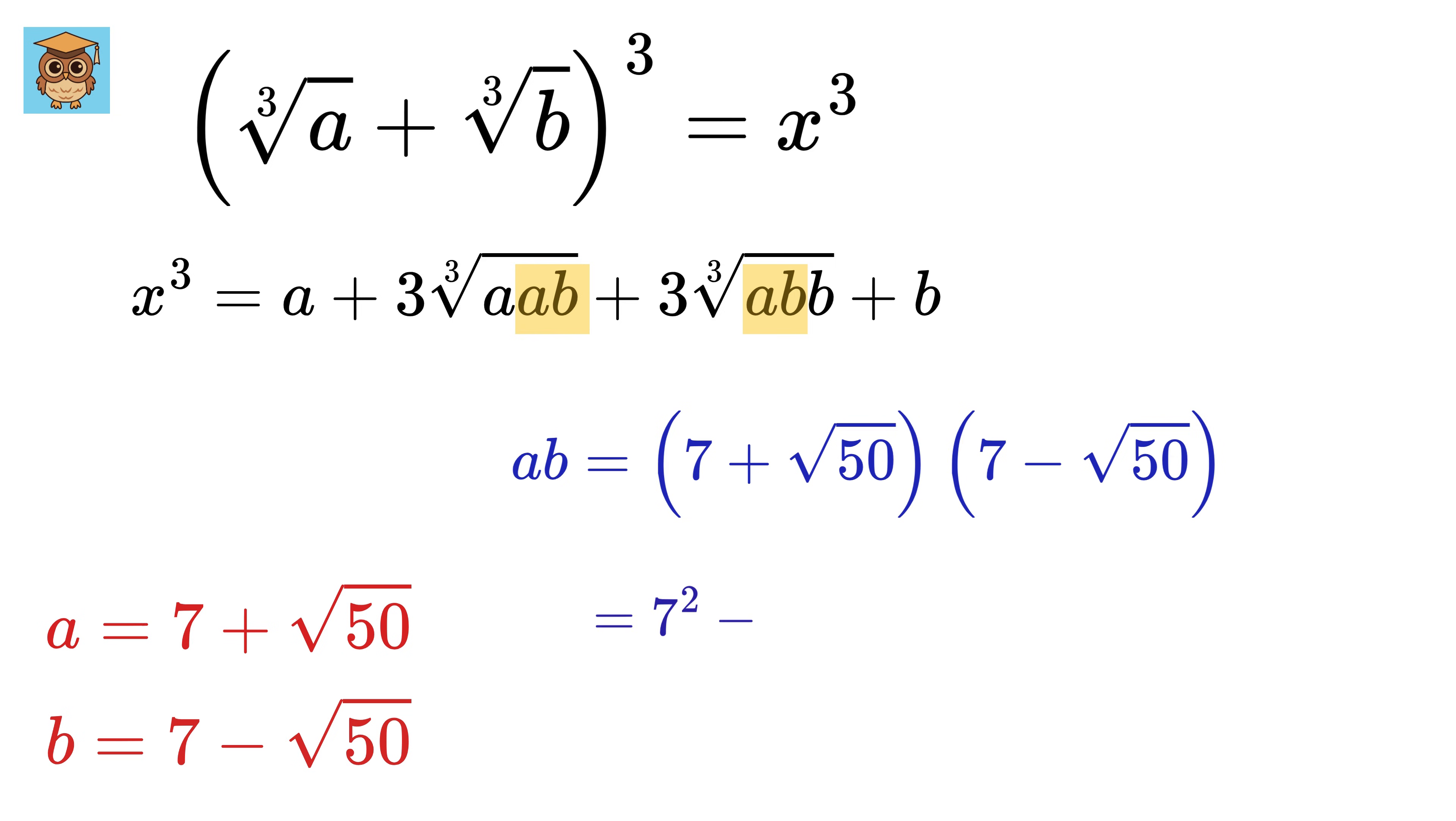It will be 7 square minus root 50 whole square, or 49 minus 50 or minus 1. We can rewrite this minus 1 as minus 1 whole cube.